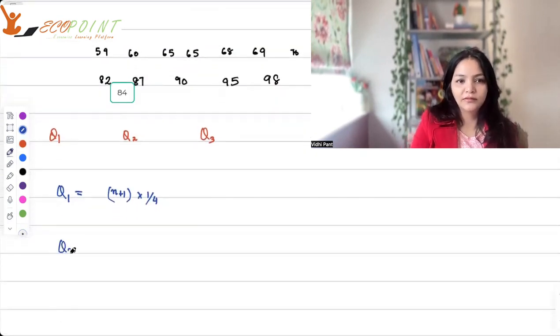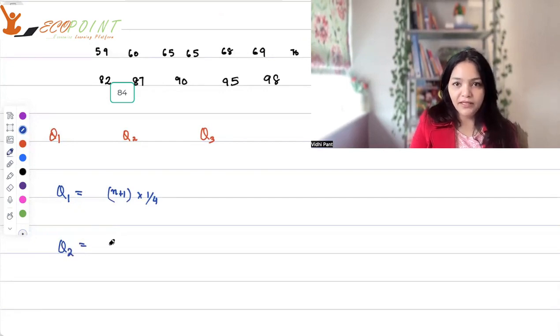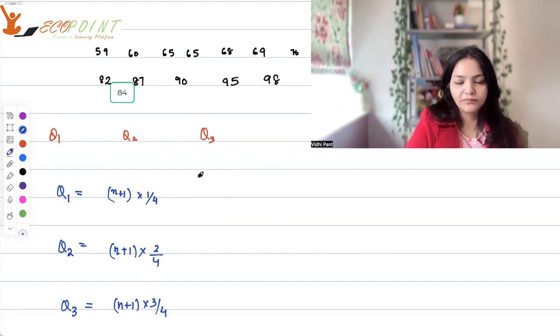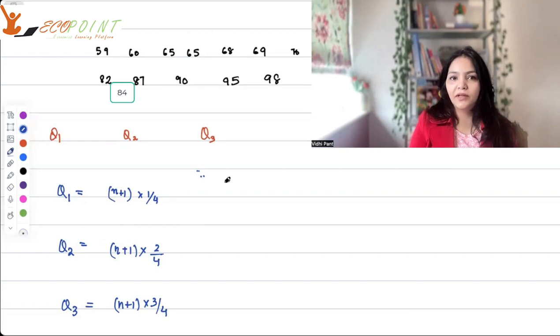Q2 is the median. Q2 is the median value. So it is (n+1) × 2/4. And Q3 is (n+1) × 3/4. How many values do I have here? I have 19 points here. 19 plus 1, that makes 20 into 1/4, that gives you 5. 19 plus 1 into 2/4, that gives you 10.